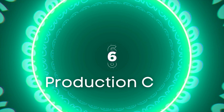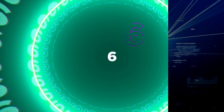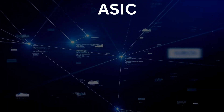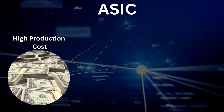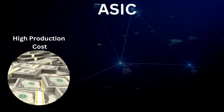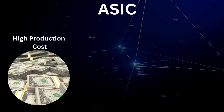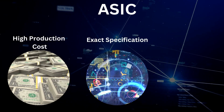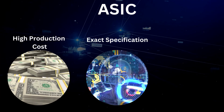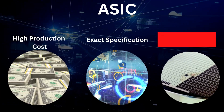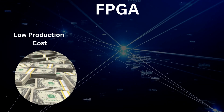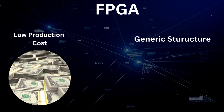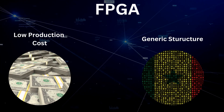Sixth is Production Cost. The production cost of ASICs is significantly higher compared to FPGAs, as they are made to exact specifications and require a more complex manufacturing process. On the other hand, FPGAs have a generic structure for all applications.